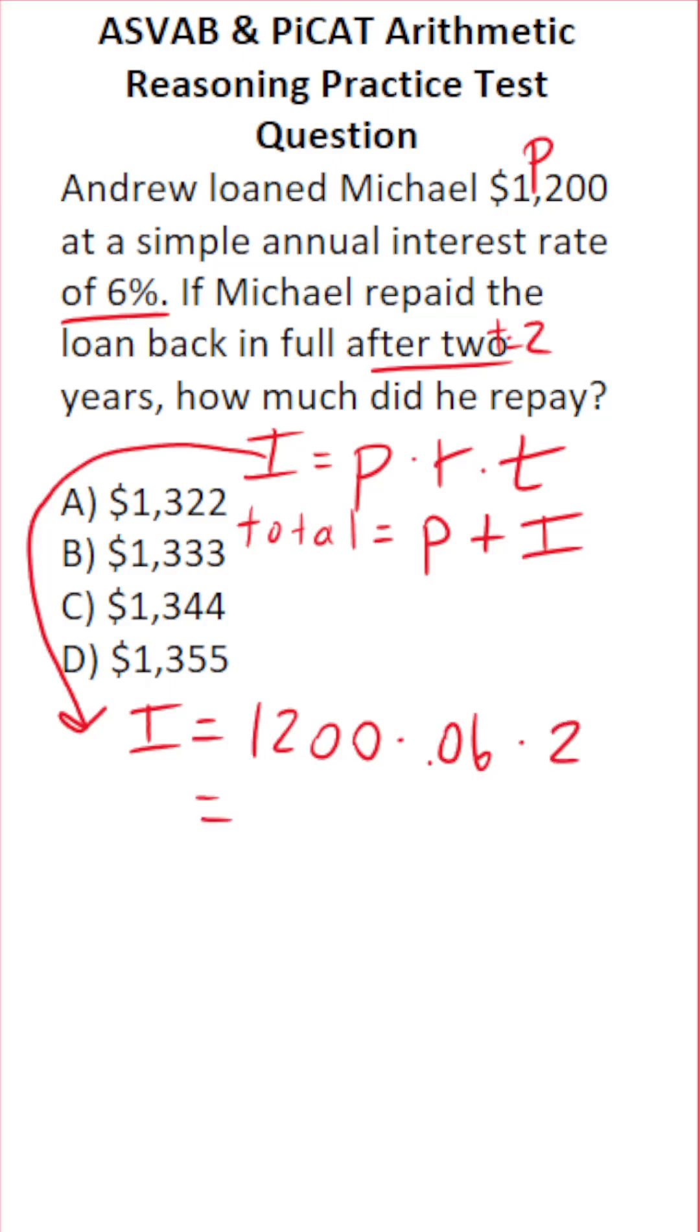Let's do mental math where we can. What is 2 times 1,200? Well, 2 times 12 is 24, so 2 times 1,200 is 2,400.